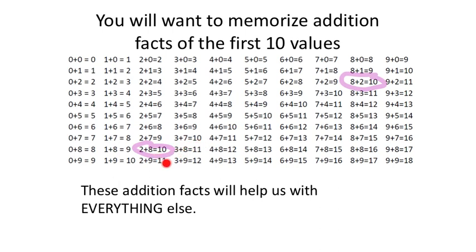Hopefully you'll notice that these facts create patterns. I see a diagonal pattern in the totals — these are called sums. Like 11, 11, 11 going diagonally. Going down a column or to the right on a row, the totals go up by ones. These are math facts we really want you to memorize as soon as possible, because if you can, the math is going to go a lot faster and you'll be able to understand more as well.